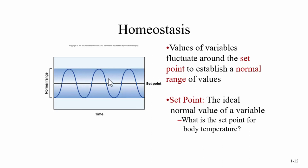We have a set point and a normal range. If you go outside of that normal range, this is when there are problems — this is when disease can happen, illness, or even death. We try to reach that set point as close as we can, but there is some leeway. Some ranges are going to be very narrow, and if you go just a little bit outside of them, that can be a big problem.